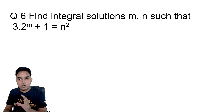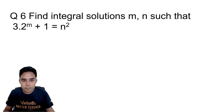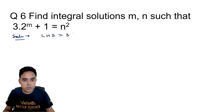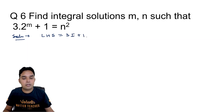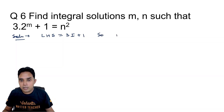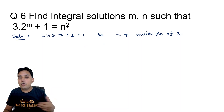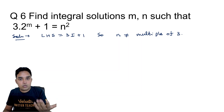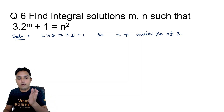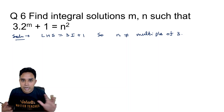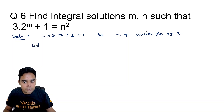Question 6: find integral solutions (m, n) such that 3·2^m plus 1 equals n². The left side is of the form 3k+1, so n cannot be a multiple of 3. Also, note that if n is a solution, then −n is also a solution since n² is the same. So we first find only positive values of n.